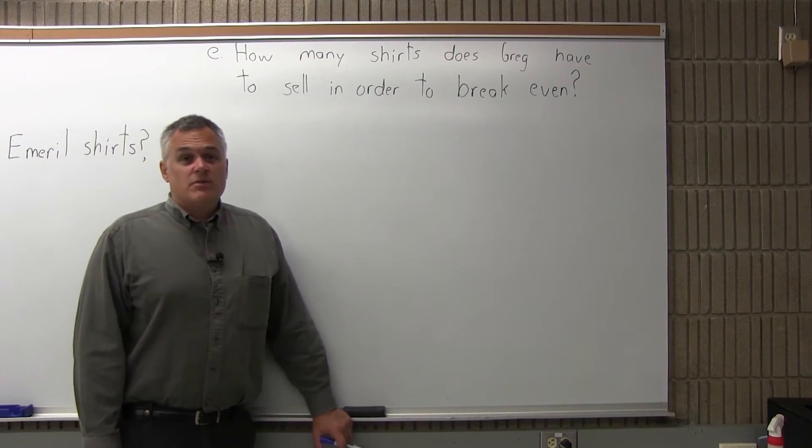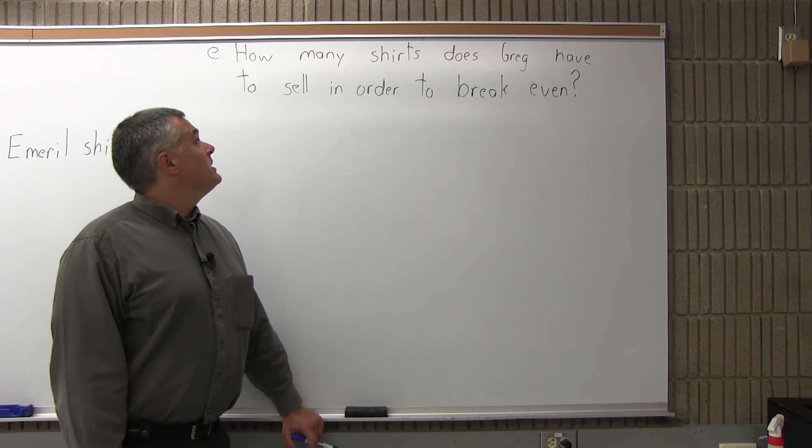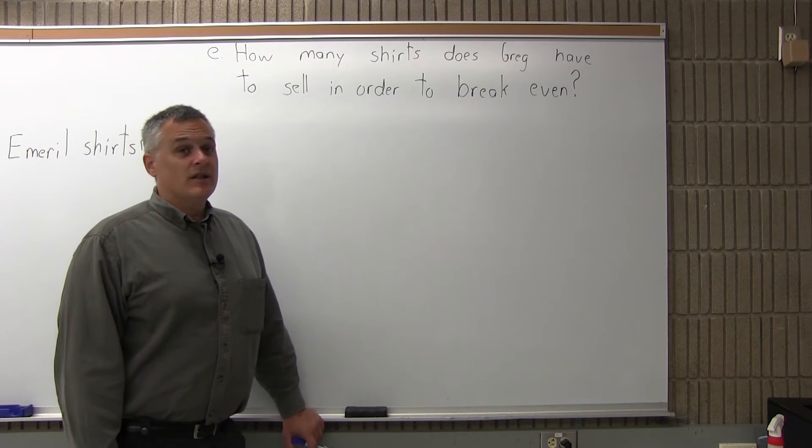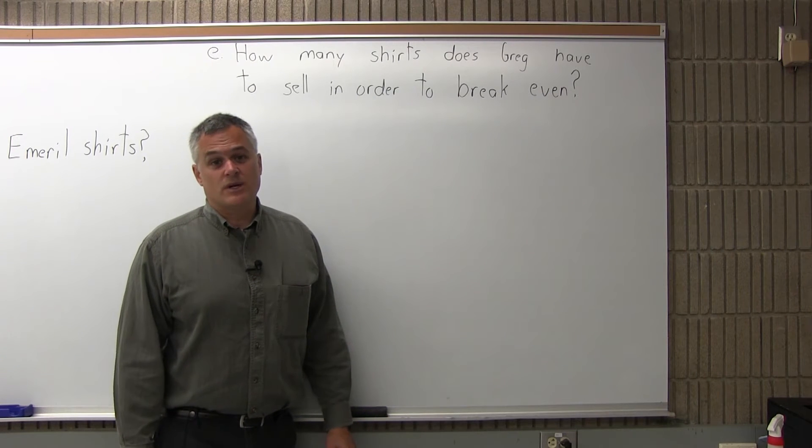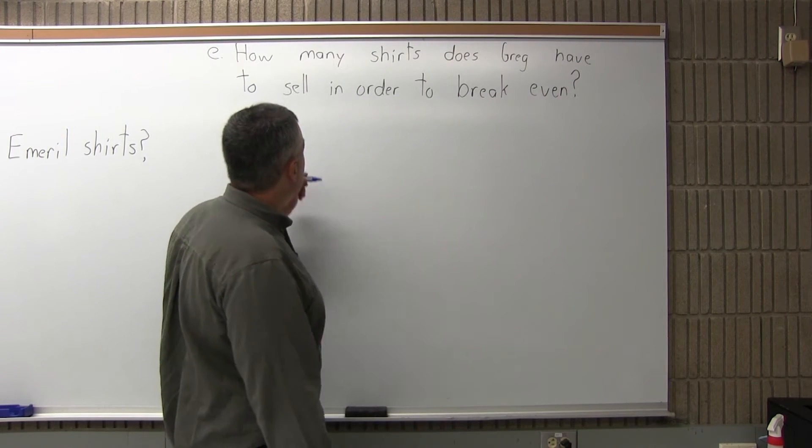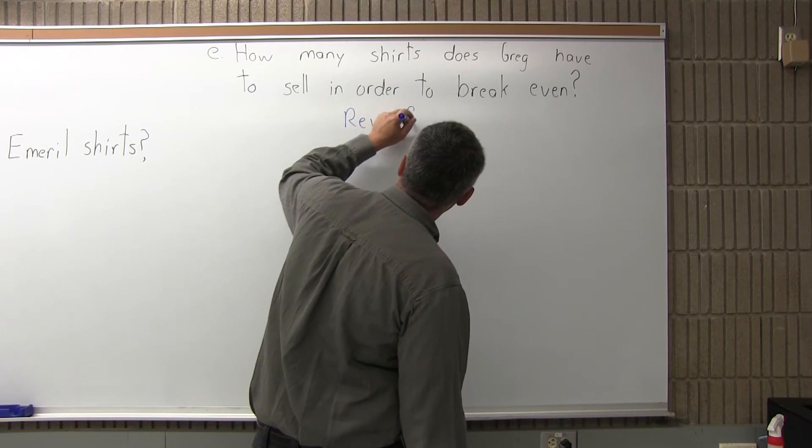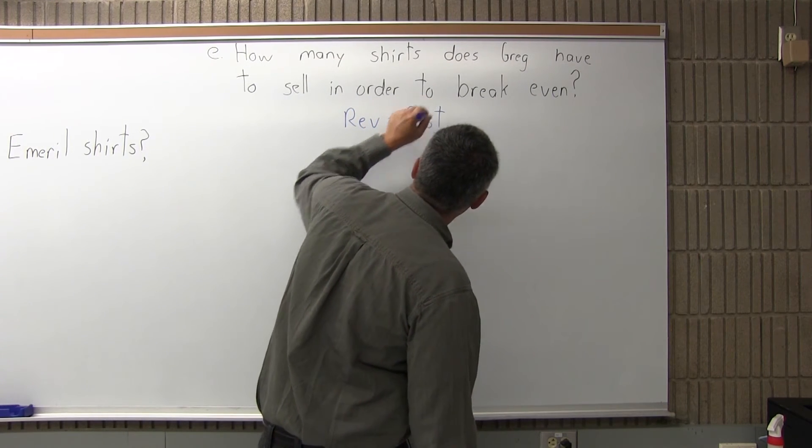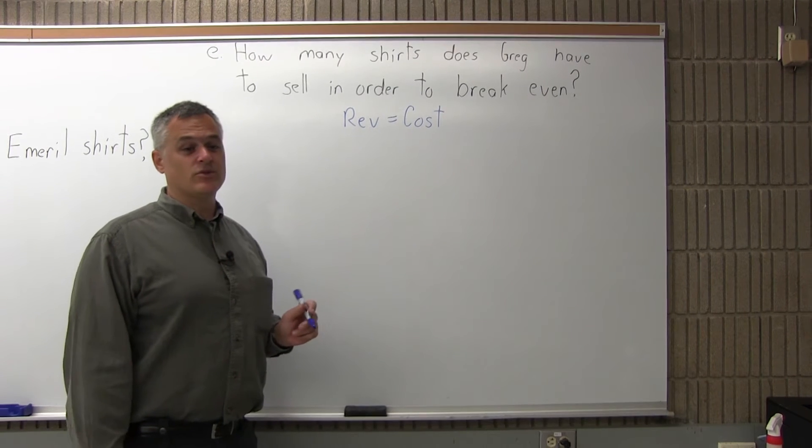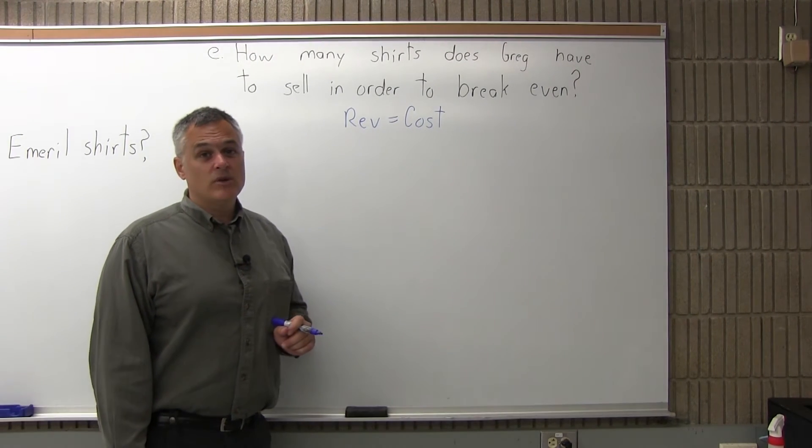So the last part of this problem, Part E says, how many shirts does Greg have to sell in order to break even? And that is the most important part of the question. So, break even occurs when revenue is equal to cost. That's when you break even.